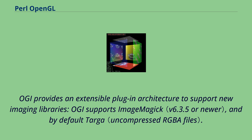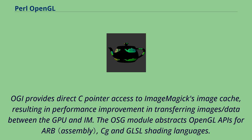OGI supports ImageMagick and by default Targa. OGI provides direct C-pointer access to ImageMagick's image cache, resulting in performance improvement in transferring images and data between the GPU and memory.